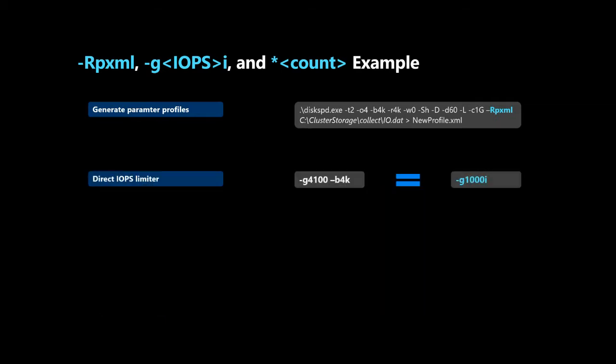The next example is for the direct IOPS limiter. Let's say you want to limit IOPS to 1,000 per thread — previously you needed to use the G flag and specify 4,100 bytes per millisecond for a 4K block size. But now you don't need to figure out that 1,000 IOPS equals 4,100 bytes per millisecond. You can just use the GI flag and simply write 1000, and that's it.